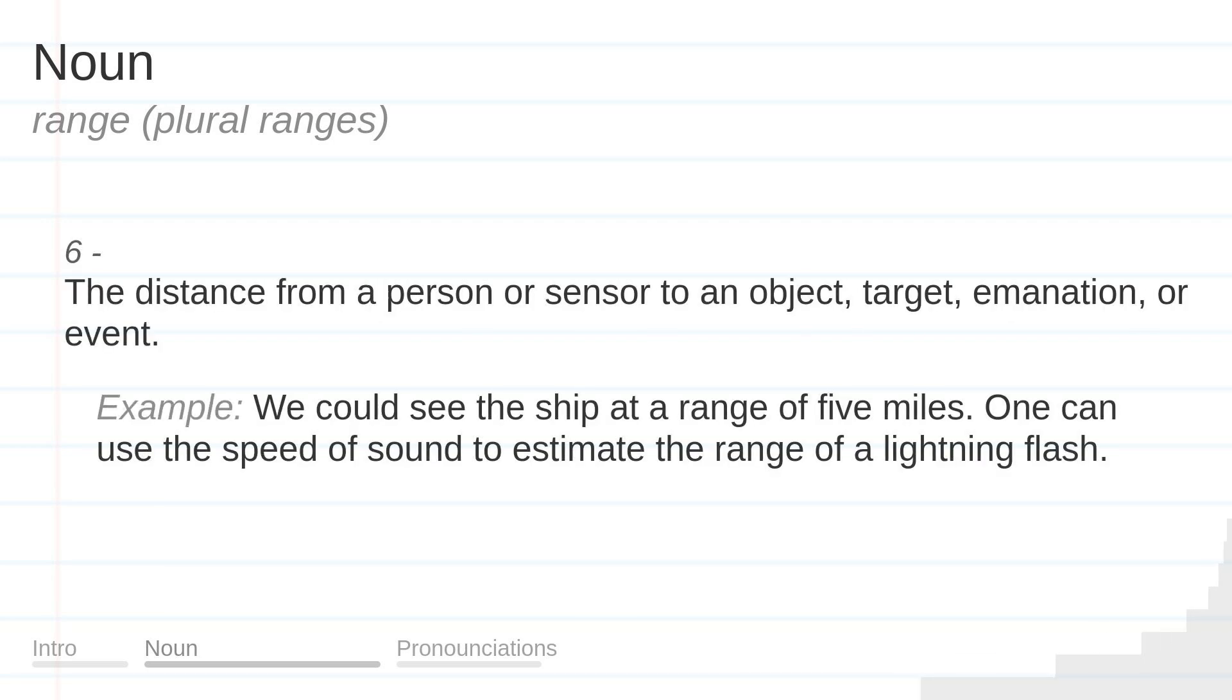The distance from a person or sensor to an object, target, emanation, or event. Example: We could see the ship at a range of five miles. One can use the speed of sound to estimate the range of a lightning flash.